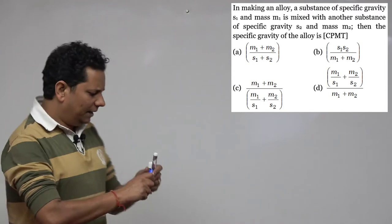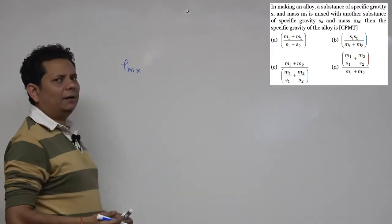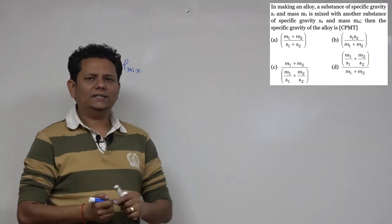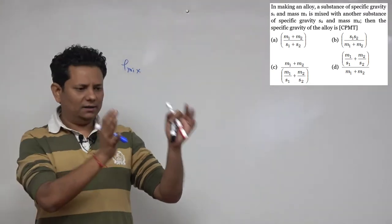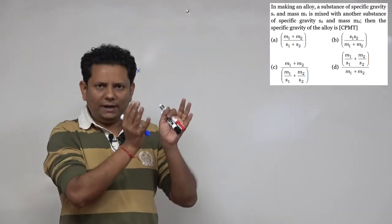This is a simple mixture problem. For an alloy, for example if you're mixing iron with something, you have to melt the iron, then mix it. When it solidifies you get an alloy. We'll use the same concept as density of a mixture.